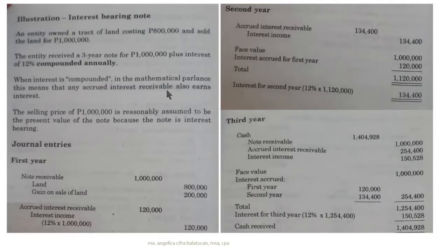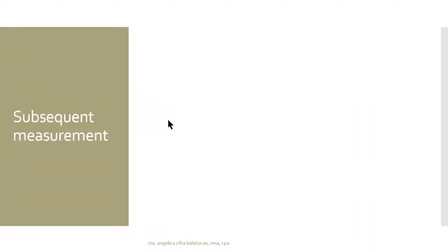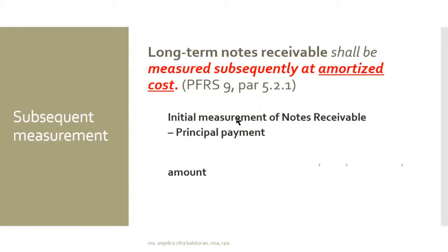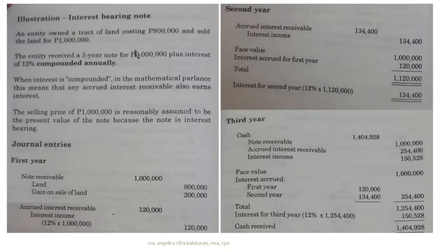Compounded means any accrued interest also earns interest. The selling price of 1,000,000 is reasonably assumed to be the present value of the note because it is interest bearing. If it is a long-term interest-bearing note, you record it at face value. If it is non-interest bearing, you record it at present value, which is the discounted value. We know this note is interest bearing because the problem states there is an interest rate.